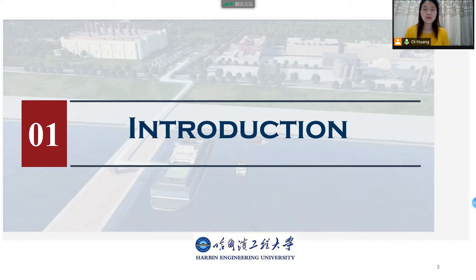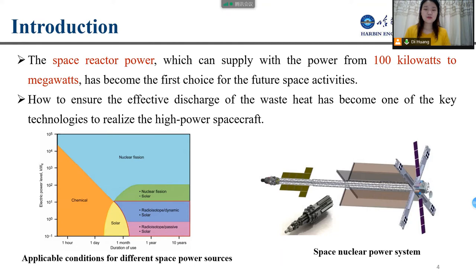The first part is the introduction. With the development of science and technology, humans' exploration of space is getting further and further. The first picture shows the applicable conditions for different space power sources. We can see that conventional space power sources can no longer meet the requirements of long working time and high power. So the space reactor power, which can supply power from 100 kW to MW, has become the first choice for future space activities.